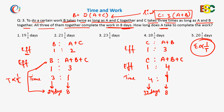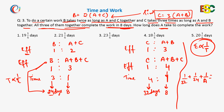Now we need to find how many days A alone takes to complete the work. The first method is to use fractions: in one day B completes 1/24 of the work, C completes 1/32 of the work, and if A takes 'a' days then A does 1/a of the work per day. Together they complete 1/8 of the work per day, so this equation can be solved for 'a'.